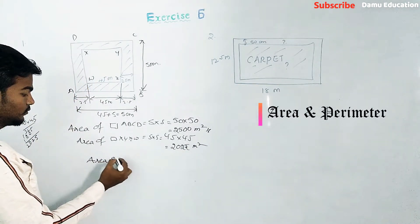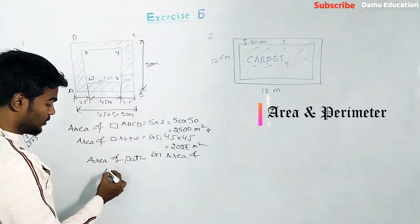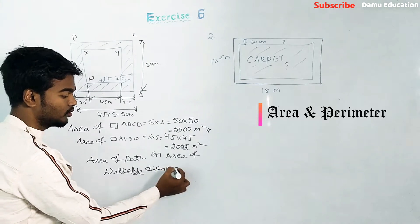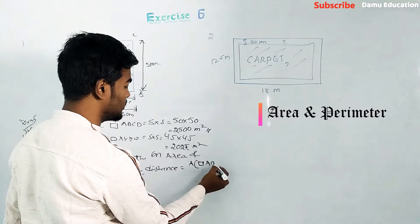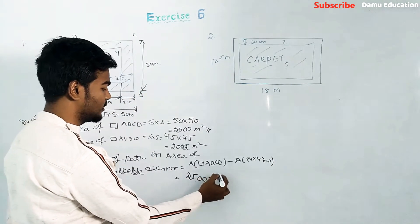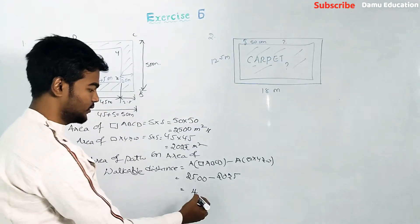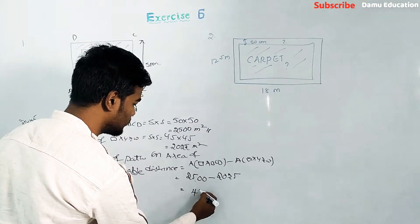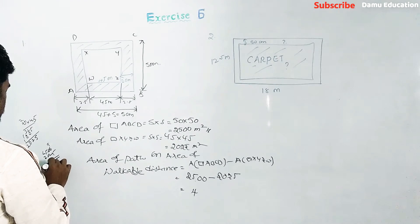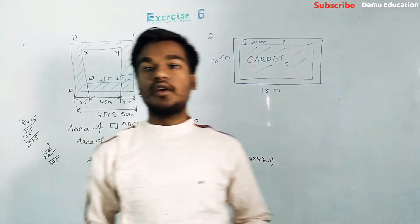The area of the path, or area of walking distance, equals the area of square ABCD minus the area of square XYZW. So that is 2500 minus 2025, which equals 475 meter square. So the area of the path is 475 meter square. Another method would be to divide into sections, which we will see in further coming classes.